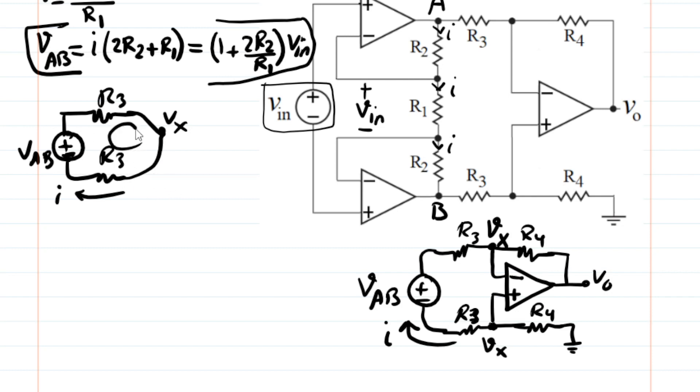We can write a KVL with a current flowing through the loop and when you write it with this definition of the direction of current, you end up with VAB is simply 2 times R3 times I. Let's keep this. Okay, now,